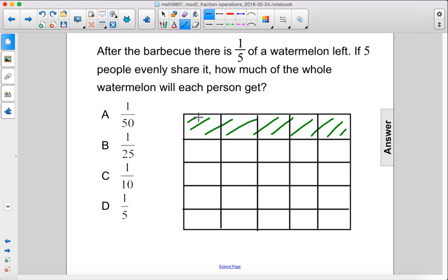Alright, so now we've divided up this one slice of watermelon into five pieces. So one person will eat just this one box here, because there's five boxes this way and five boxes this way, there's twenty-five boxes total. So it's one box out of twenty-five.